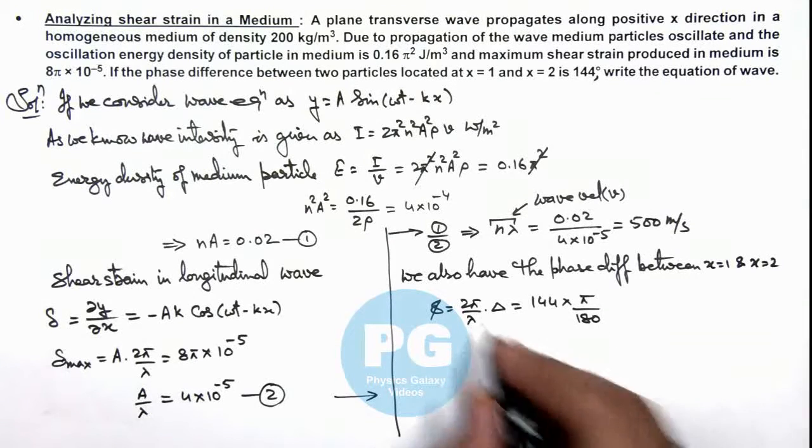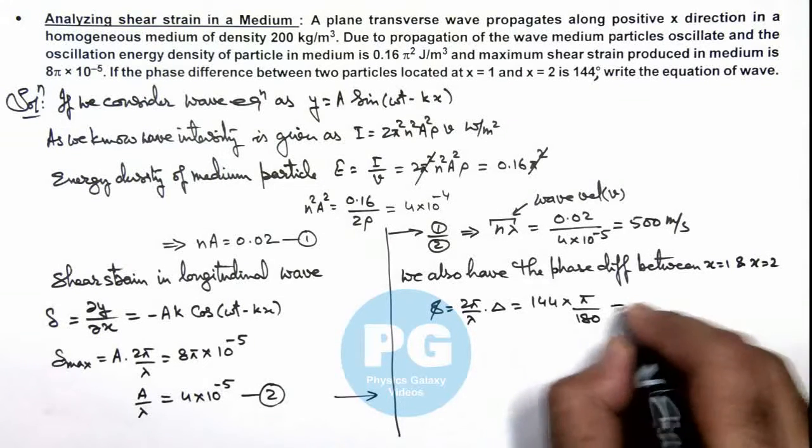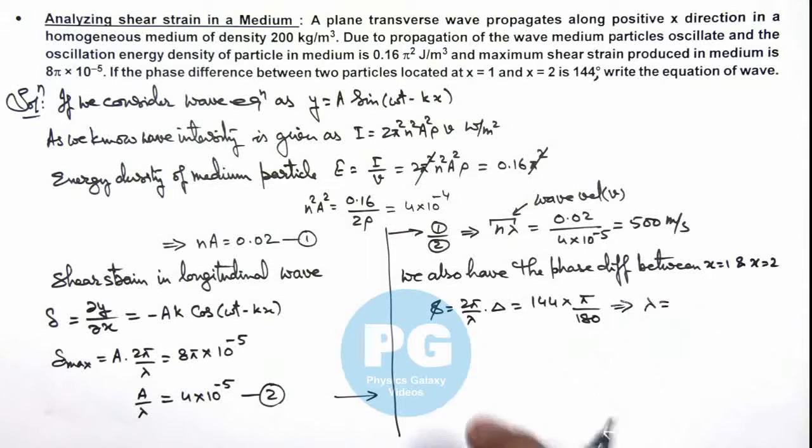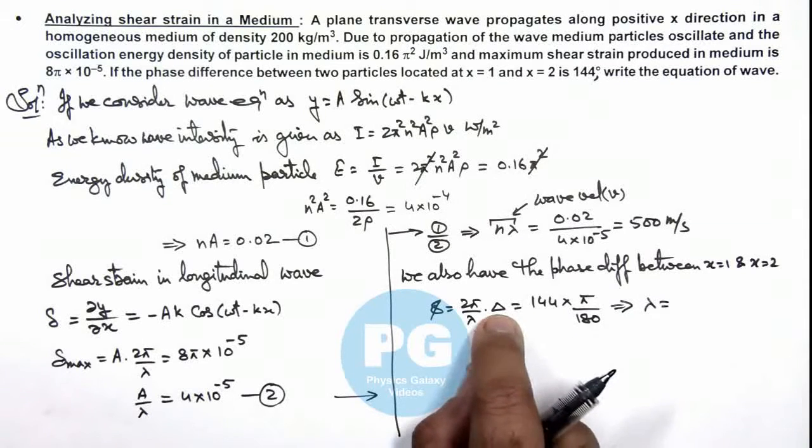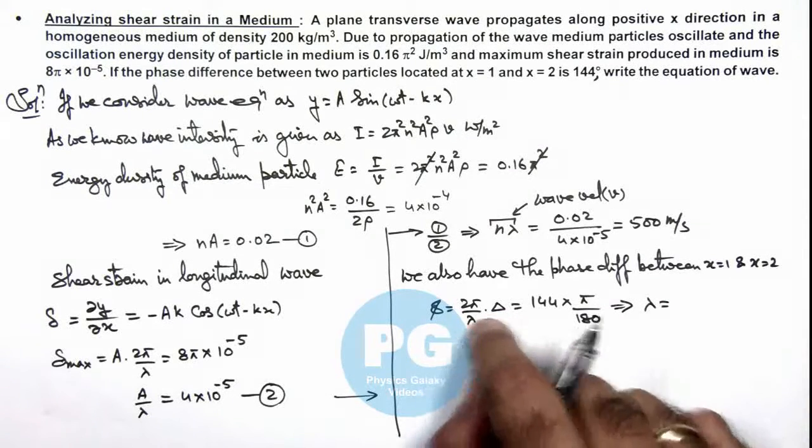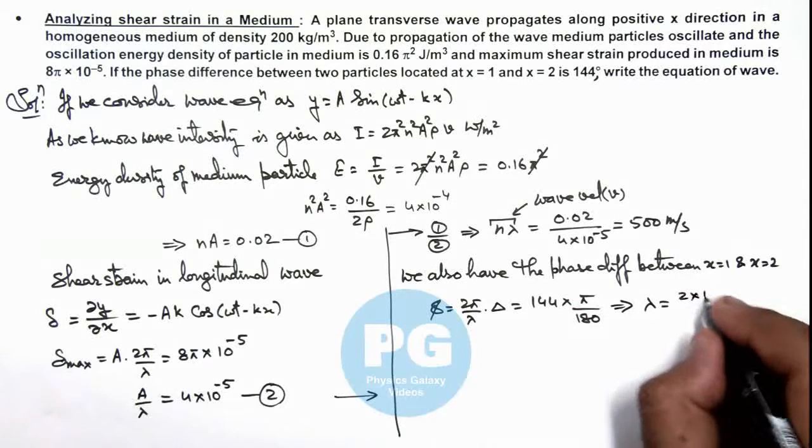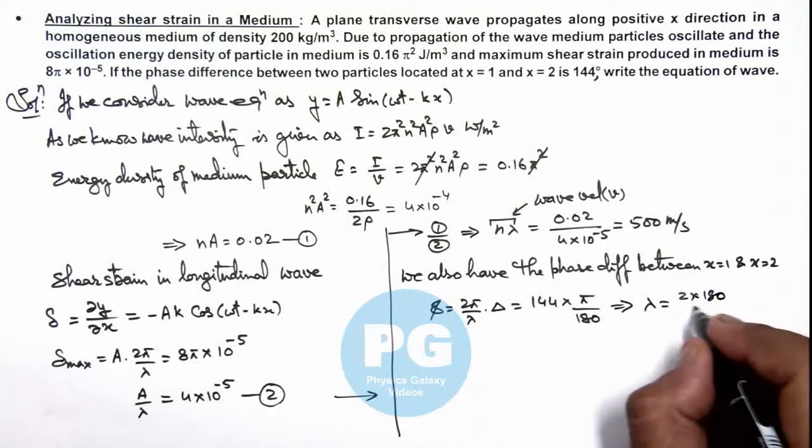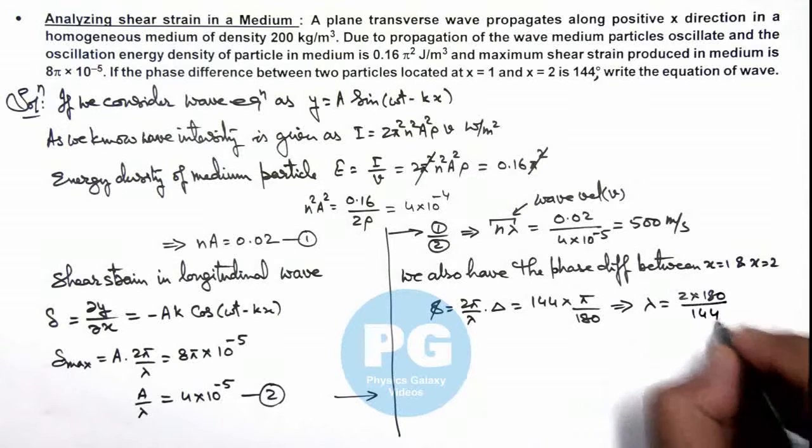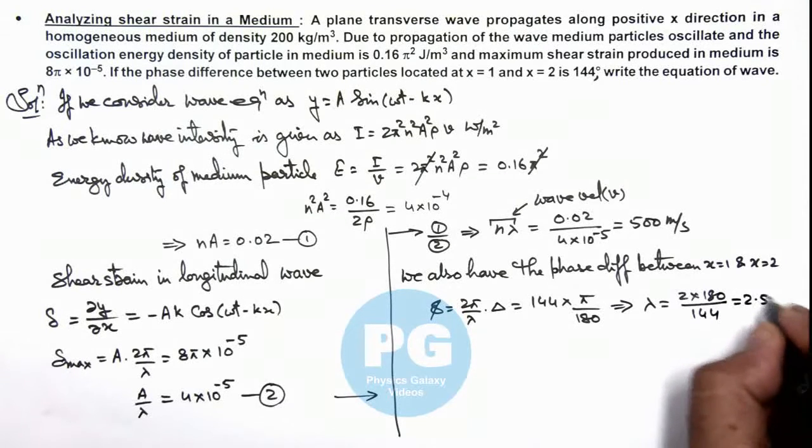So here the value of lambda is directly calculated. Here path difference is 1, so lambda can be given as 2 multiplied by 180 divided by 144, that is equal to 2.5 meter. So if we have got the value of wavelength...